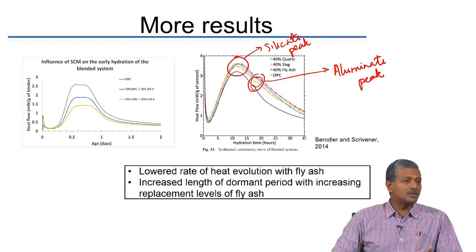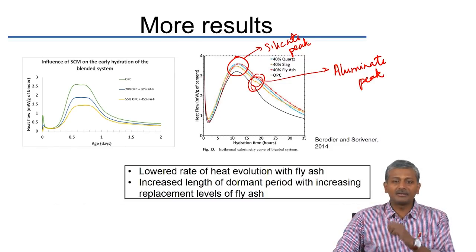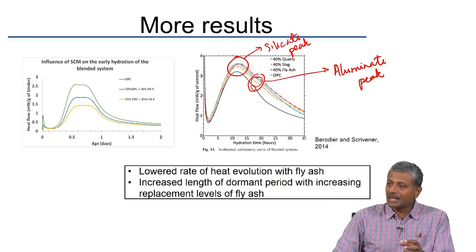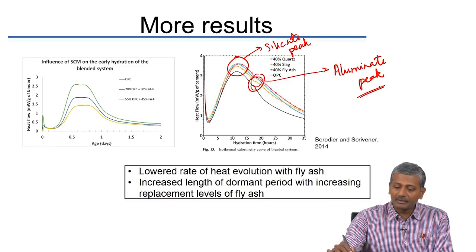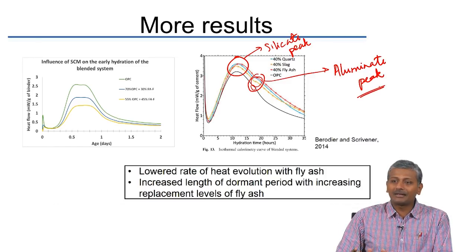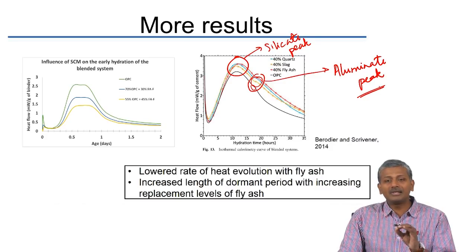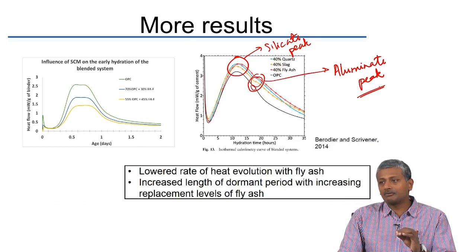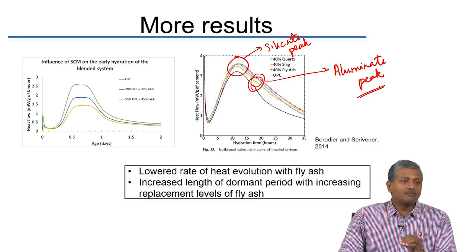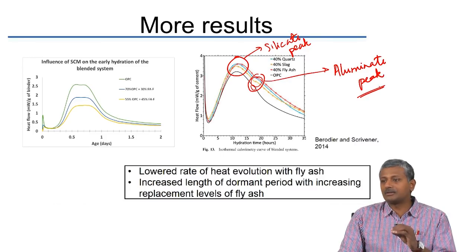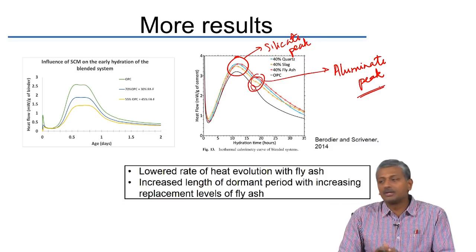Cement must be proportioned carefully with the right amount of sulphate. If there is excess sulphate in the system, the aluminate peak may start occurring even before the silicate peak. The silicate peak is crucial for achieving the right level of early strength. You need to proportion gypsum so that the aluminate peak always follows the silicate peak.